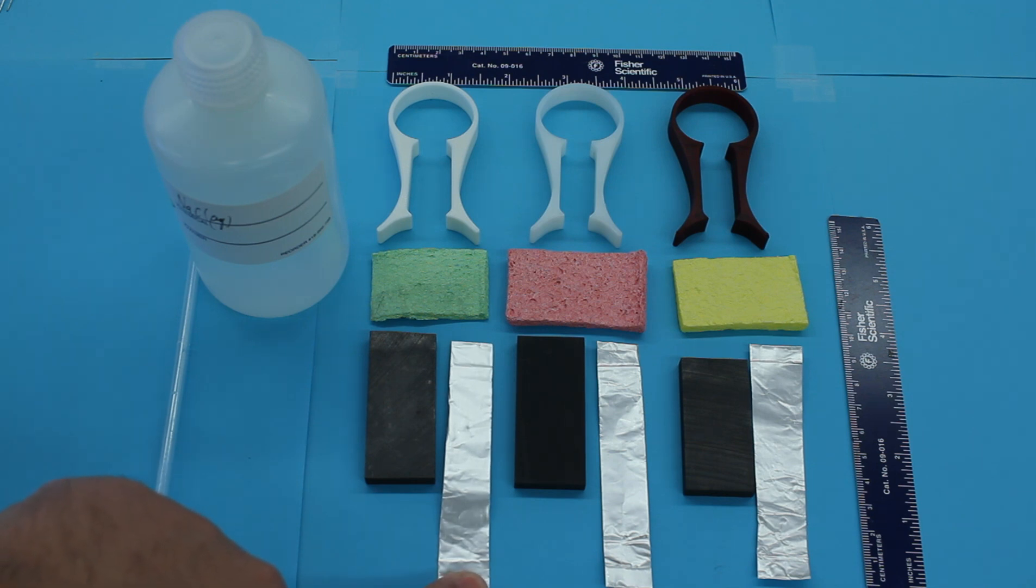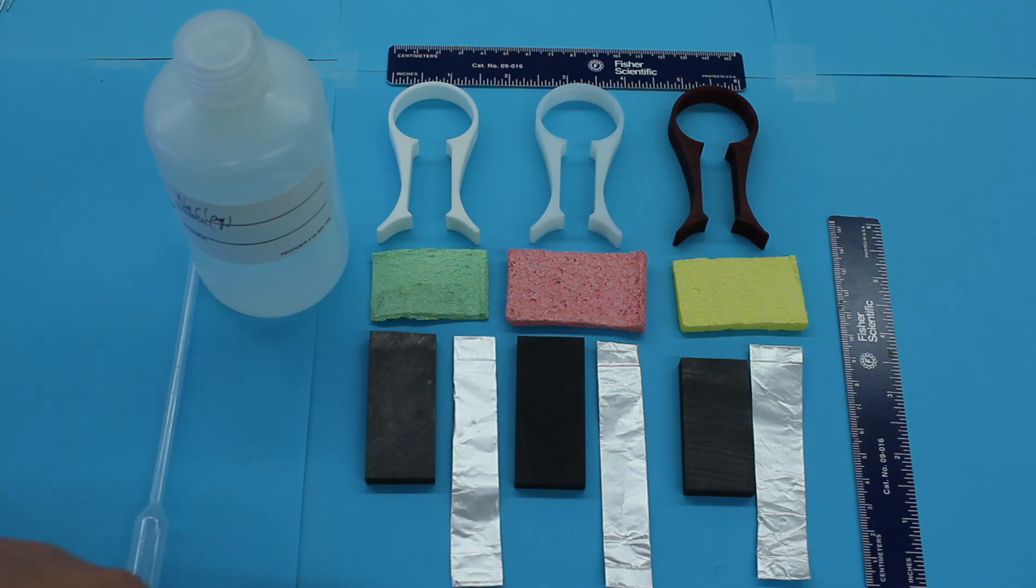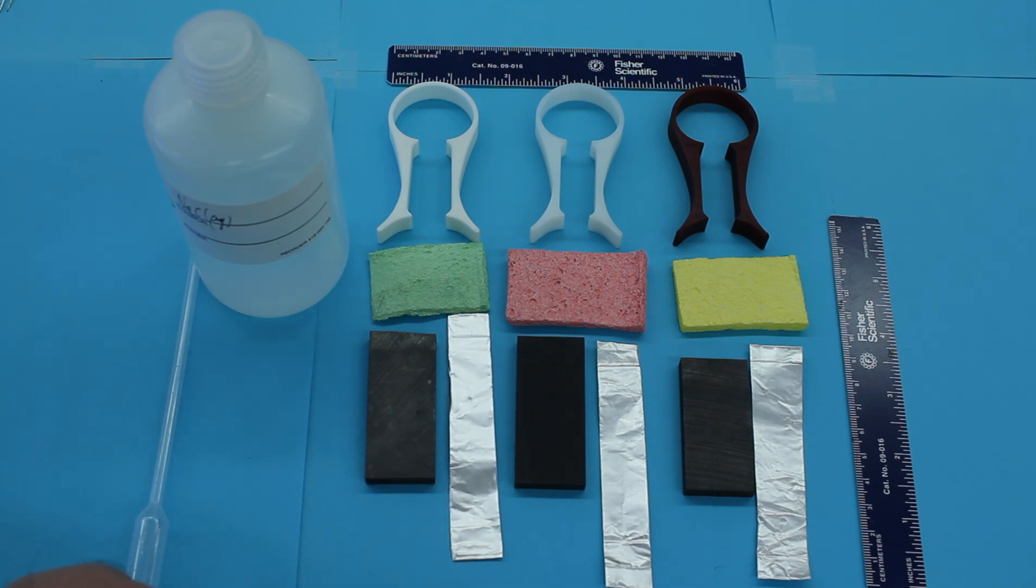We have about a 10 centimeter strip of aluminum foil. It's double folded and double thickness, about one centimeter in width. This will be our anode for our air aluminum battery.